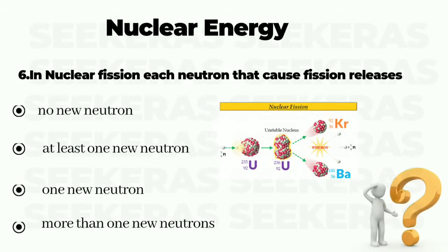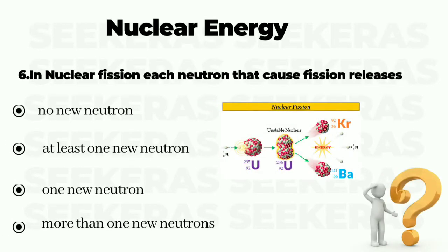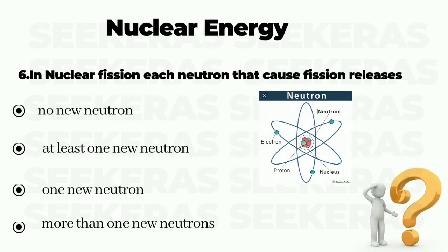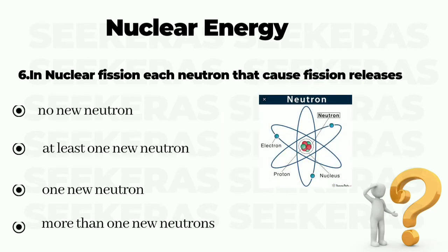Question number 6. In nuclear fission, each neutron that causes fission releases: option A no new neutron, option B at least one new neutron, option C one new neutron, and option D more than one new neutrons. The correct answer is option D, more than one new neutrons.